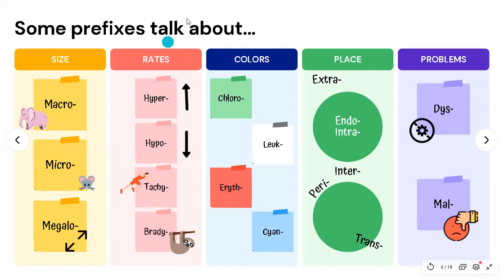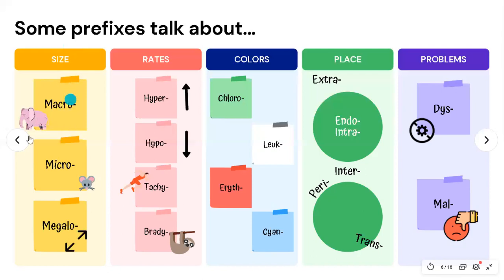To make it easier, we can classify prefixes into categories: size, rates, colors, place, and problems. For size, we have prefixes like 'macro' meaning large, 'micro' meaning small, and 'megalo' meaning large.